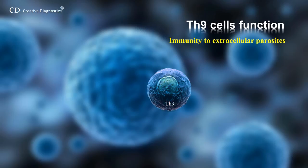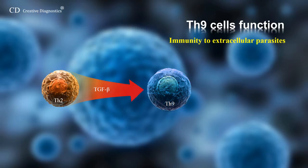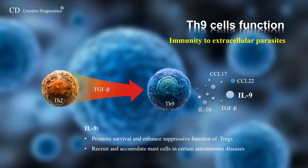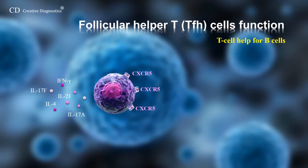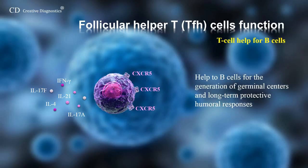Interleukin-9 has been identified in a subset of T-cells distinct from TH2 cells, now delineated as TH9 cells. Interleukin-9 is known to promote survival and enhance suppressive function of Tregs. They are also important in promoting mucus production and activation of mast cells as well as eosinophils. Follicular helper T cells were not initially described based on cytokine production and transcription factor expression patterns, but demarcated as a unique population of activated CD4-positive T cells in the germinal centers of human tonsils that express the chemokine receptor 5. TFH cells provide help to B cells for the generation of germinal centers and long-term protective humoral responses.